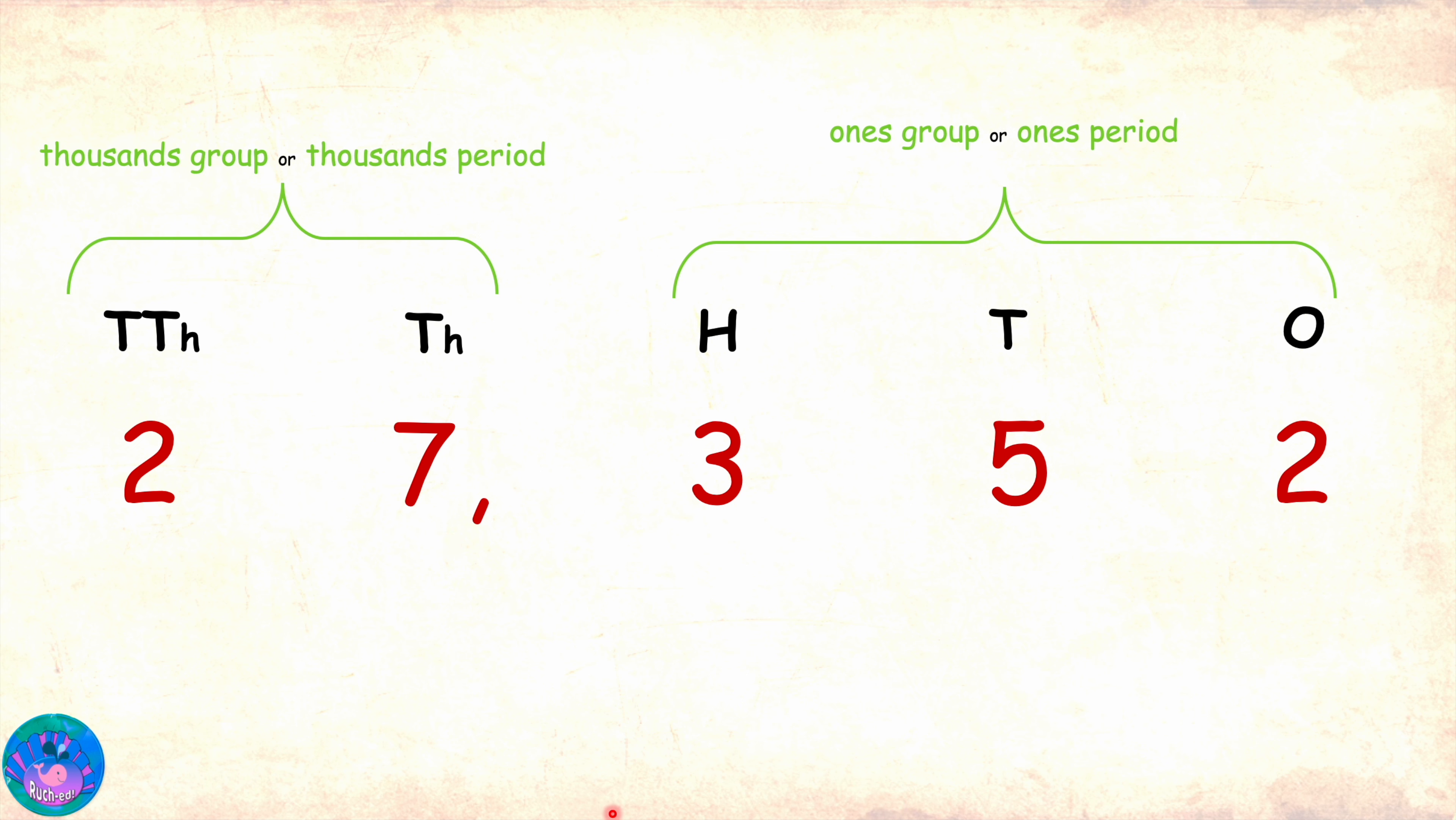The rule for writing large numbers is place a comma between periods like this, and now coming to reading the numbers. We start reading four and five digit numbers with the thousands period. We read the number in the period and add the word thousand to it. So, in the case of this number, it is 27,000. Now, we already know how to read the ones period. It is 352. So, this number is 27,352. So, to read the thousands period, we read the number in this period then add the period name thousand.